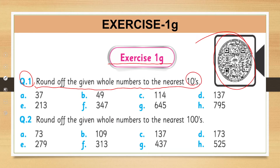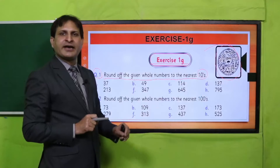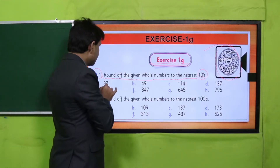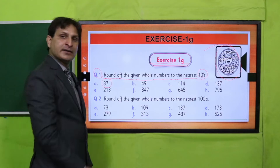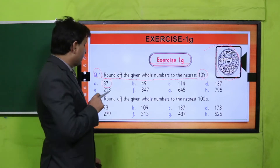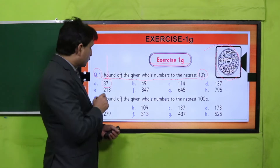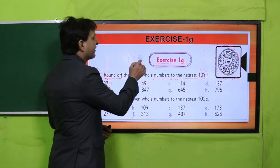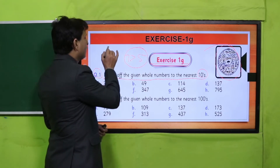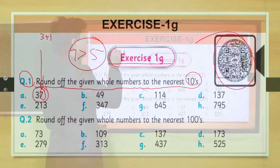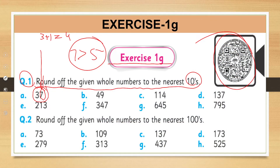جب آپ nearest 10 پر round off کرتے ہیں تو ones place والے digit کو دیکھنا ہے۔ اگر وہ five سے greater ہے تو جو tens place کے اوپر digit ہے اس میں one add کر دیں گے۔ مثال کے طور پر seven ہے جو greater than five ہے، تو rule یہ ہے کہ tens digit 3 میں one add کریں گے تو four ہو جائے گا۔ سو وہ number round off ہو کر 40 بن جائے گا — seven کی جگہ zero لگا دیں گے۔ Similarly آپ نے یہ سارے parts complete کر لینے ہیں۔